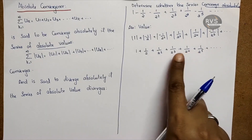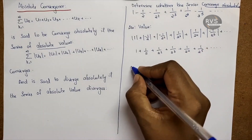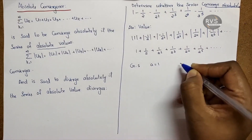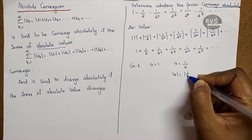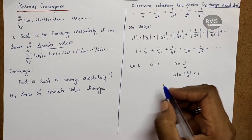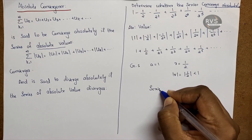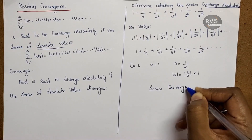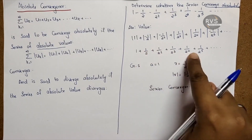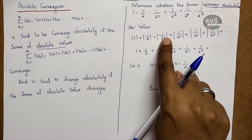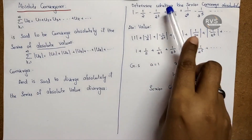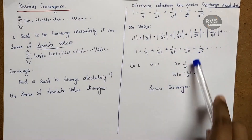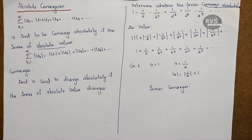This is a geometric series with first term 1 and common ratio r equal to one-half. The modulus of r is one-half, which is less than 1, so the geometric series converges. Therefore, the series of moduli converges, which means it has absolute convergence. The given series converges absolutely.